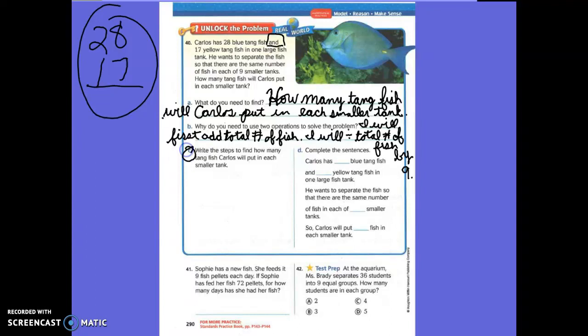Part C is where we are going to do what we said in Part D. So first we're going to add the total number of fish. Then the second step, going to divide that number of fish by nine. We said 28 plus 17 equals 45. Then 45 divided by nine equals five. Complete the sentences. Carlos has 28 blue tank fish and 17 yellow tank fish. He wants to separate the fish with the same number of fish in each of nine smaller tanks. So Carlos will put five fish in each smaller tank. Okay. We are done.